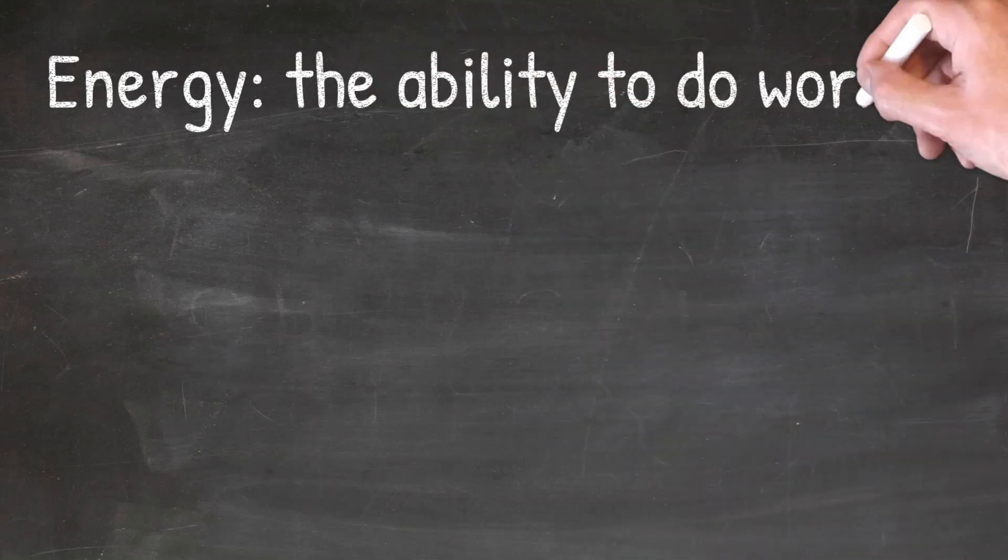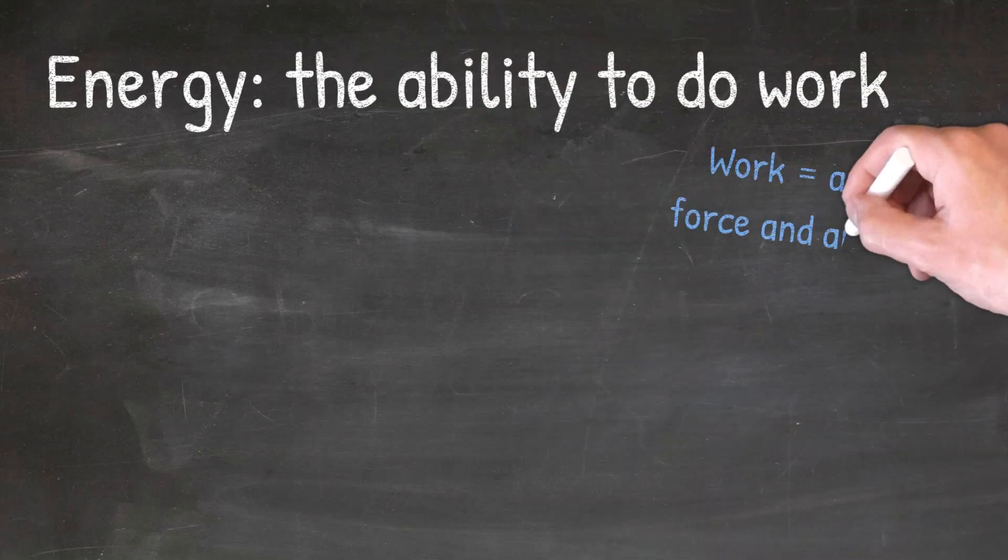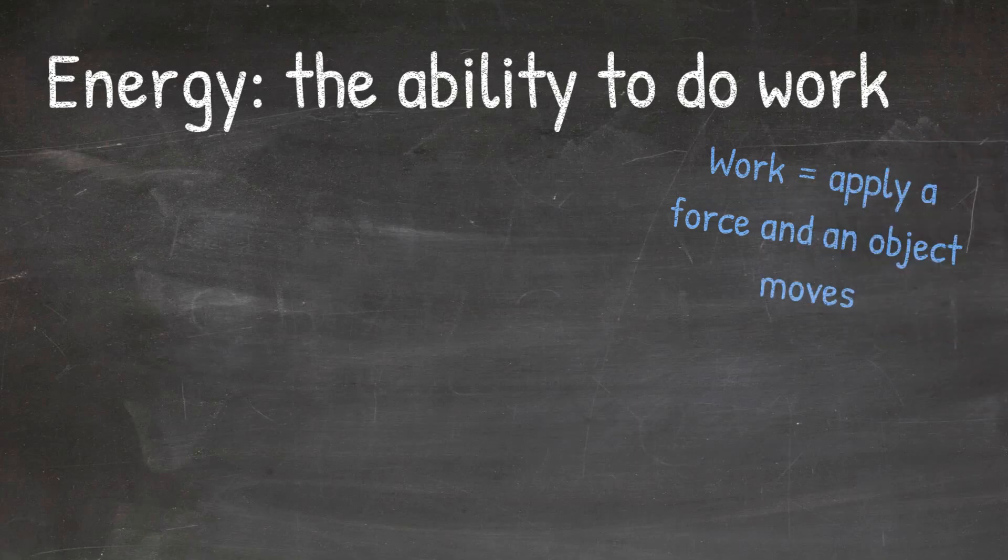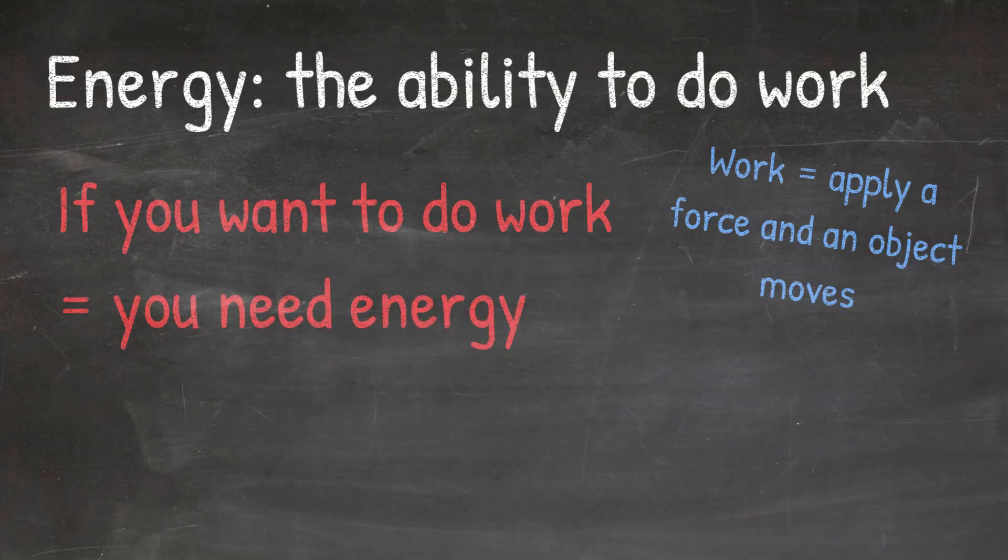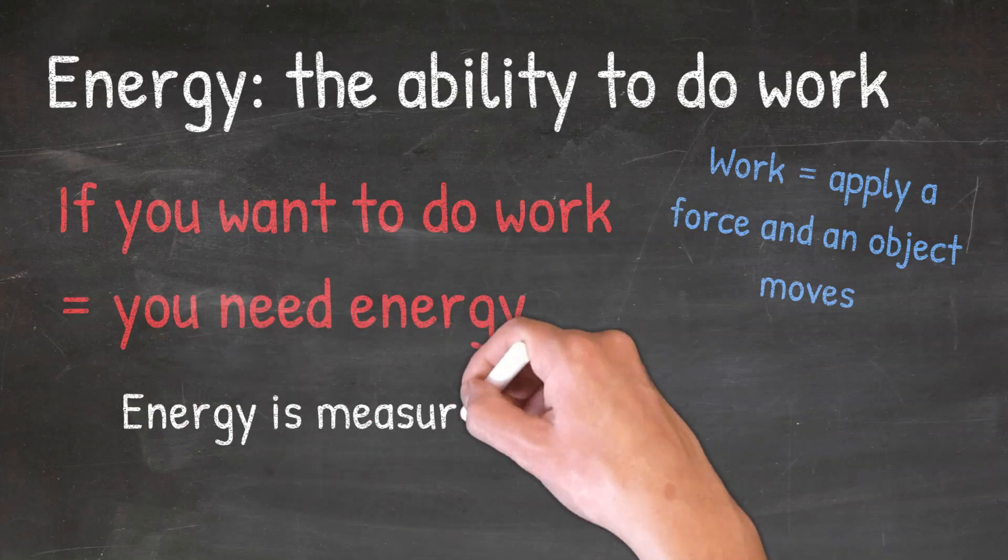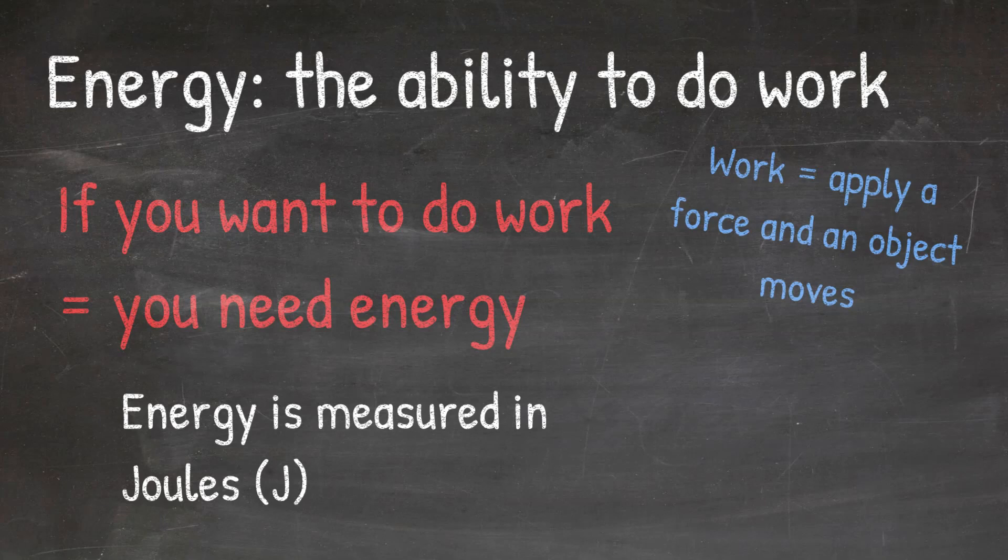Energy is just the ability to do work. Work is just when you apply force to an object and move it a certain distance. We will cover work in more detail in a later video. The main thing to take away from energy and work is that if you want to do work, aka move an object, you will need energy to do that. Energy is going to be measured in joules, which is abbreviated with the capital letter J. This will be important later when we learn how to calculate energy.